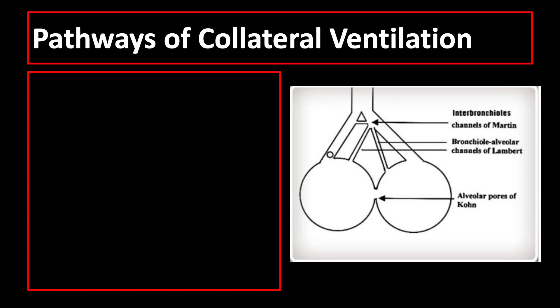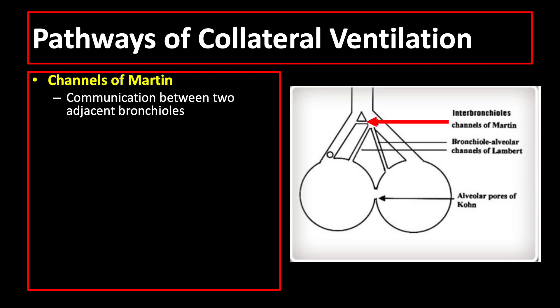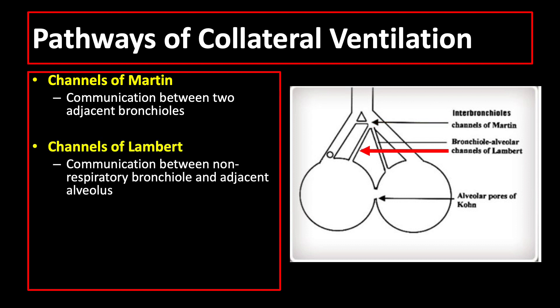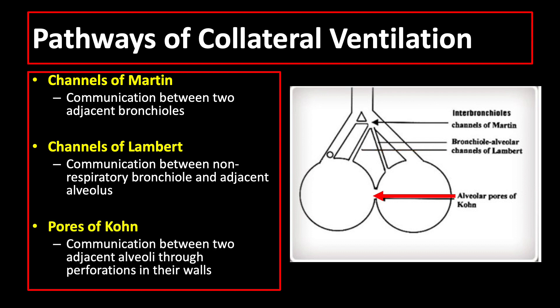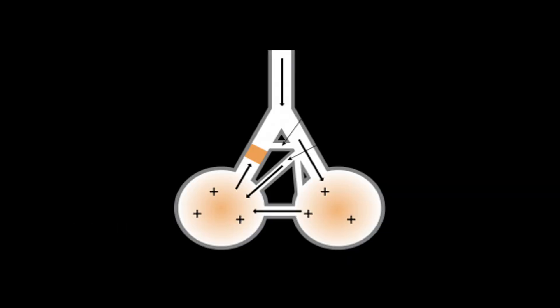There are also pathways of collateral ventilation that ensure distal lung units are ventilated despite obstruction of a proximal airway. These include the channels of Martin, which are communications between two adjacent bronchioles, and the channels of Lambert, which are communications between a non-respiratory bronchiole and an adjacent alveolus. These pathways ensure that distal lung units continue to be ventilated in the event of obstruction.